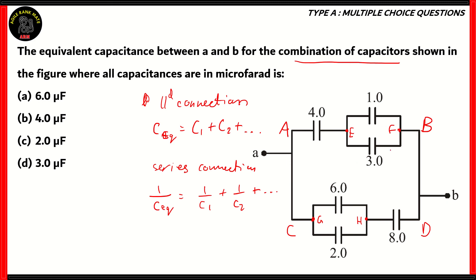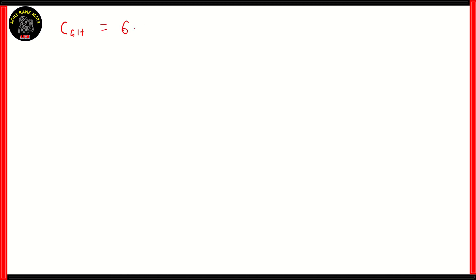So, how do we solve this question? Well, we have parallel connections across EF and GH, so let's find out their equivalents. The capacitance across EF will be equal to 1 microfarad plus 3 microfarad, and that will give you a total of 4 microfarad — let's represent it as C1. Now, if we look at GH, the capacitors across GH are connected in parallel as well. So, you get 6 microfarad plus 2 microfarad, giving you 8 microfarad, and then you can use it as C2.